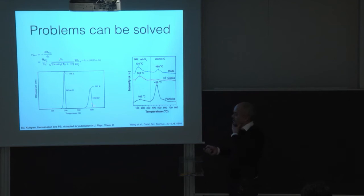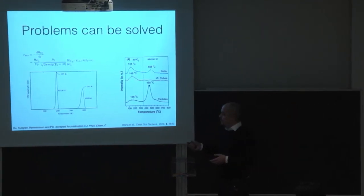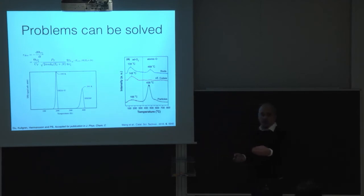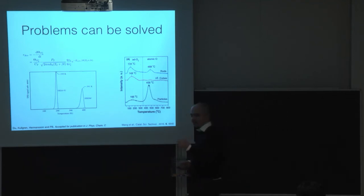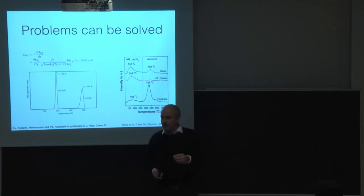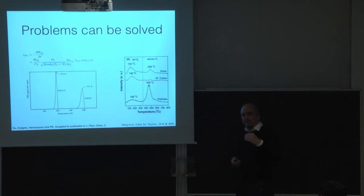If we use the HSE functional we actually solve the underbinding problem. With the same structural model we now get closer to the experimental value. The next step is to understand the broadening seen in the experiment — why is the experimental peak so much broader — and this is ongoing work. This is the DFT level where we put a lot of effort into finding the best functional to describe the system, which we then use for parametrization of higher-level models.